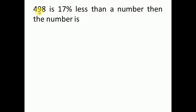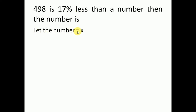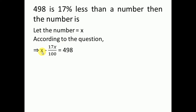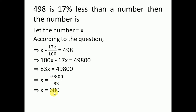The next problem: 498 is 17% less than a number. What is the number? 498 is the result. '17% less than a number' means: let the number be x. Then x minus 17% of x equals 498, i.e., x − (17x/100) = 498. Solve for x and you will get x = 600.